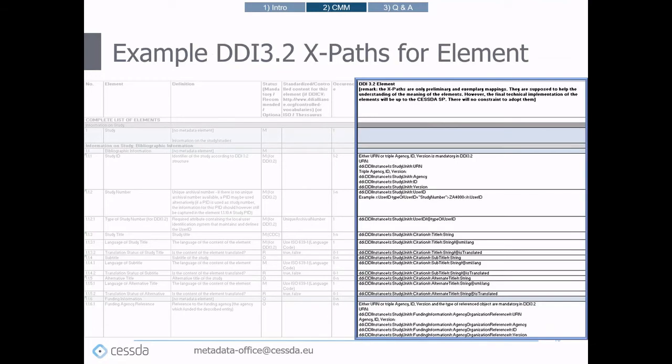The last column of the CMM metadata schema contains DDI 3.2 example XPaths. The CMM doesn't specify which XPaths are to be used to capture an element, since in DDI Lifecycle there are different possible ways to represent an element. The XPaths in the CMM represent only one of those possibilities and were merely intended to improve understanding of various elements.